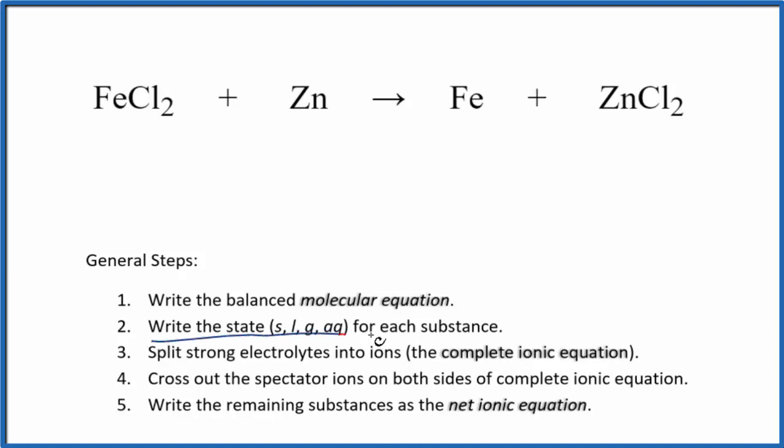Next, we can write the states for each substance. If you know your solubility rules, compounds with chlorine are very soluble, aqueous. Then zinc, that's just a zinc metal, so that's a solid.